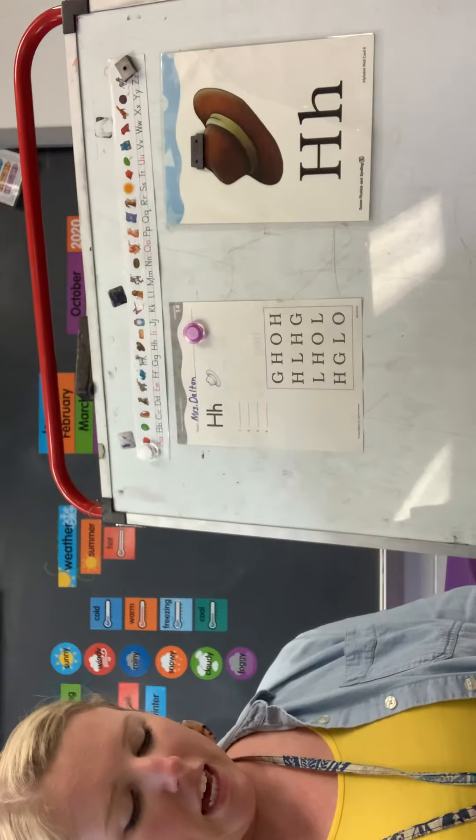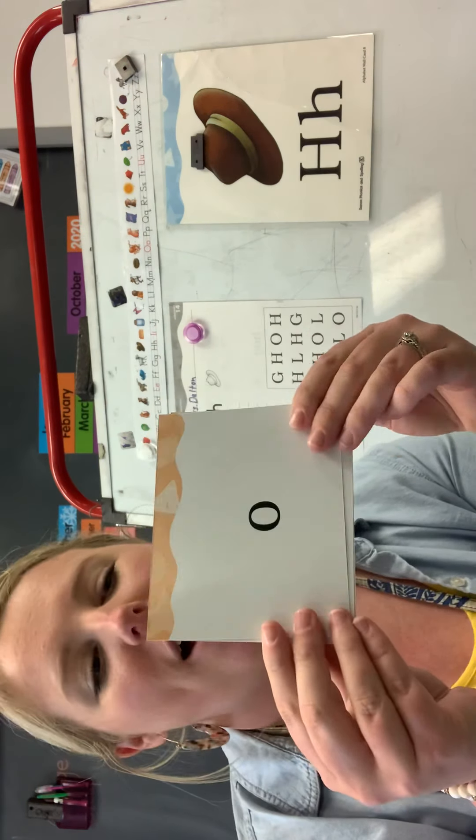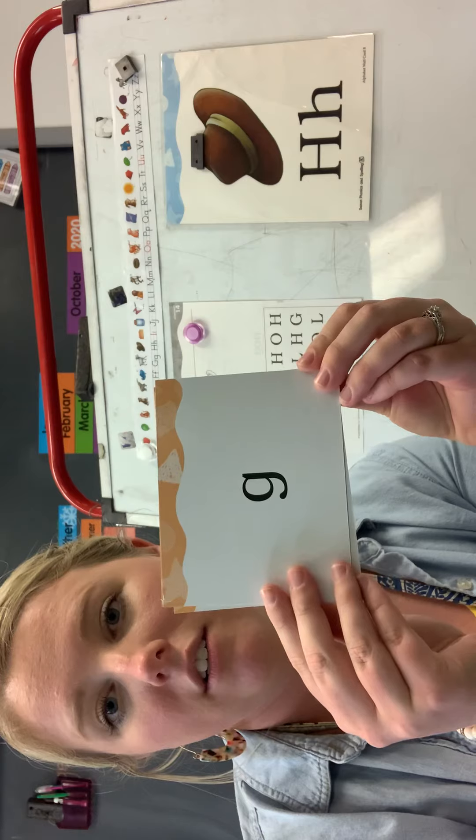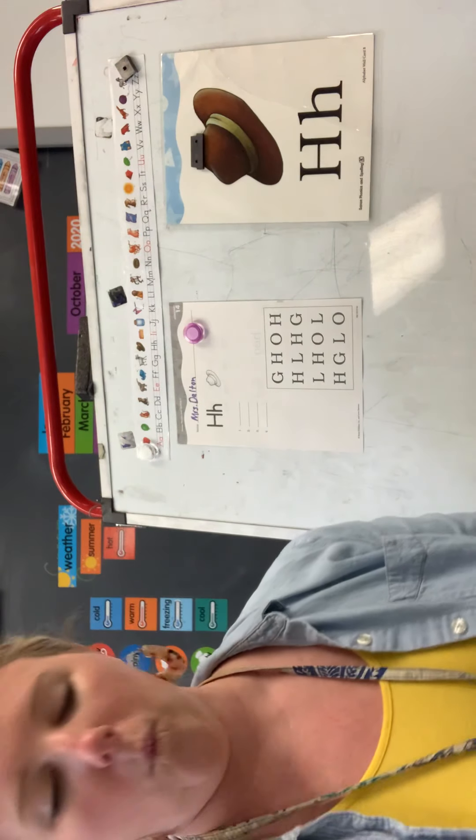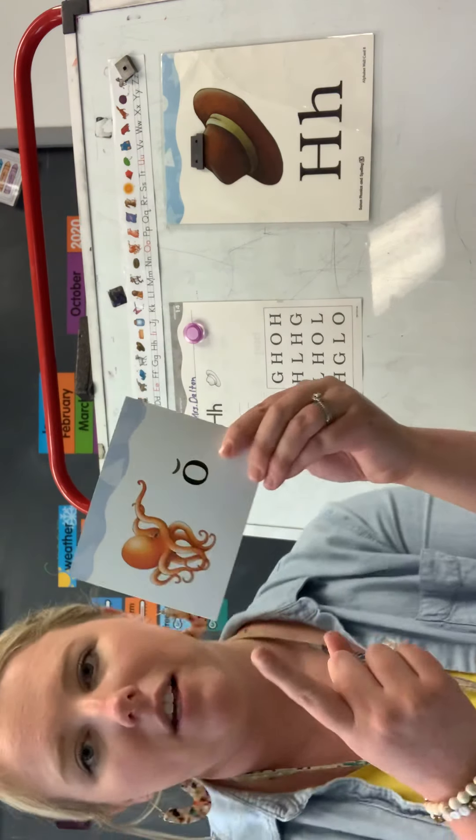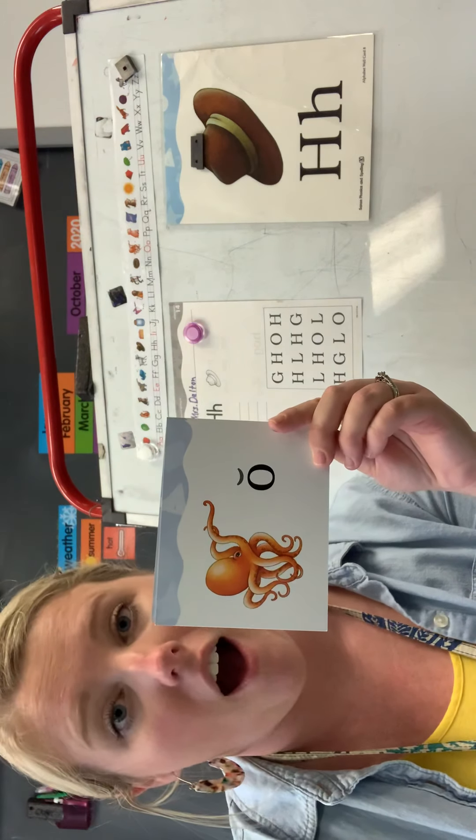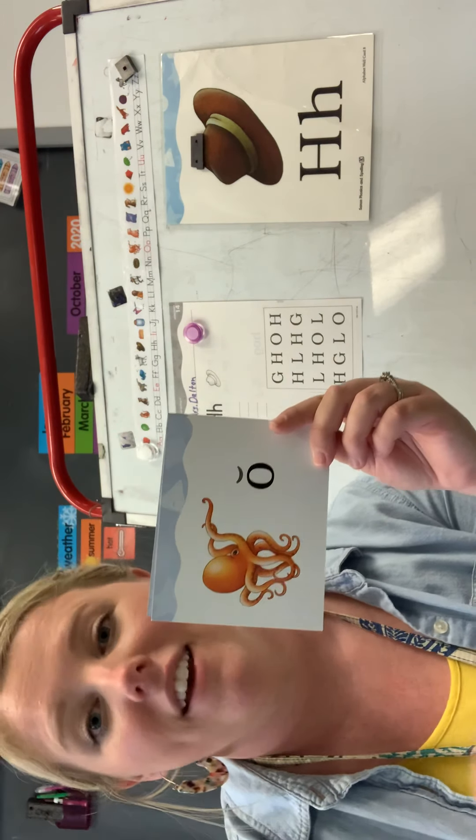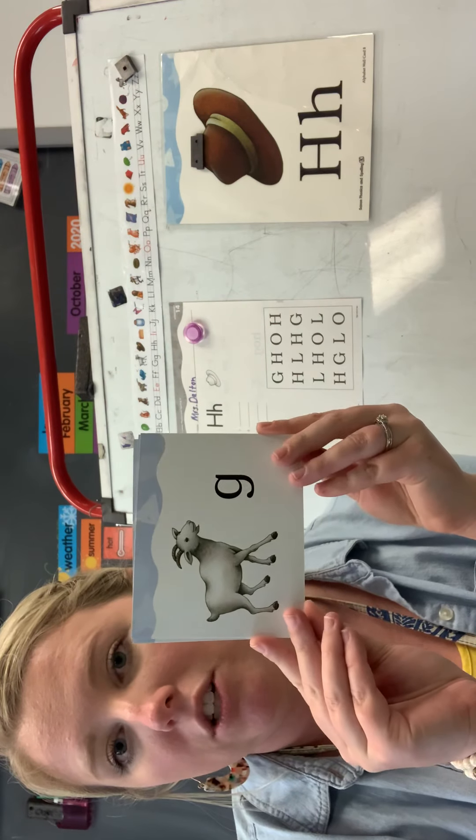What is this letter? O. Good job. What's this letter? G. Good job. What's this letter? H. Good job. What is this picture and sound? Octopus O. Good. That's the short sound of O.